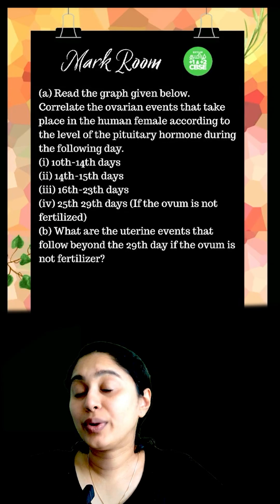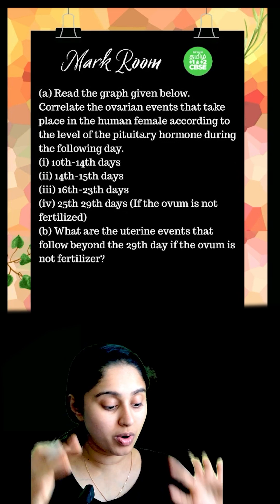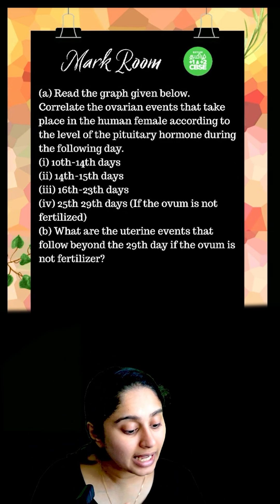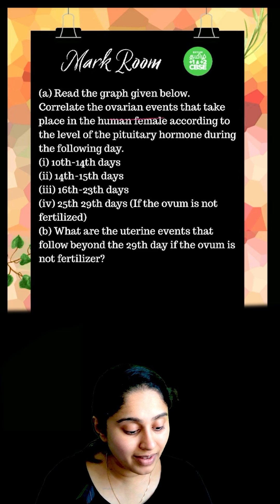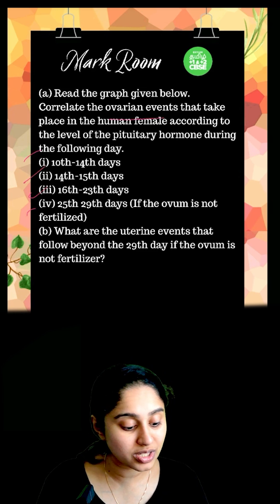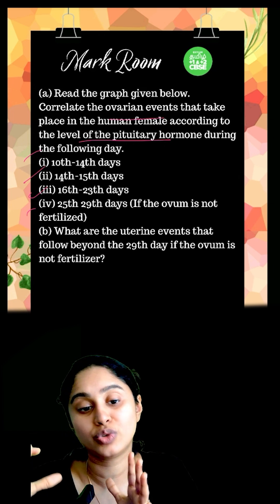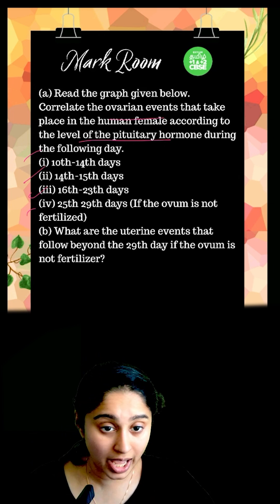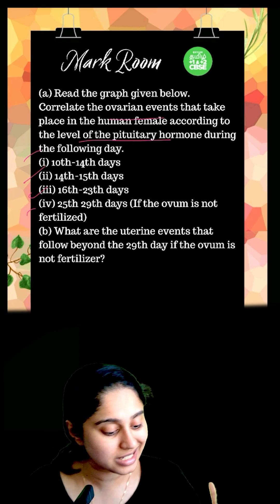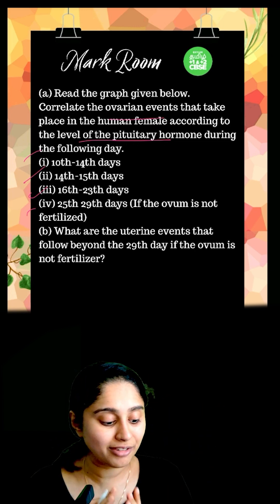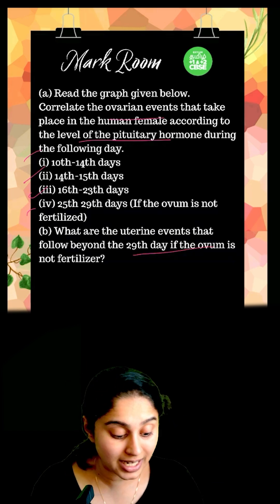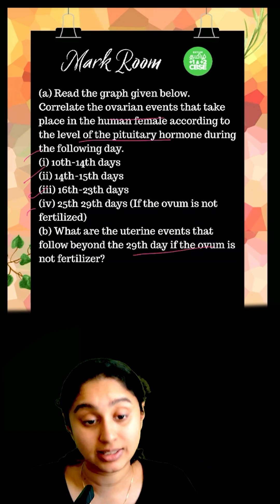Hello everybody, today I am back with another interesting question for our mark room session. You have to read the paragraph and see the ovarian events that are taking place. The days given are: day 10 to 14, day 14 to 15, day 16 to 23, day 25 to 29 if the ovum is not fertilized, and what happens after the 29th day if it is not fertilized.